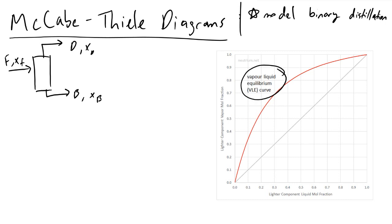The VLE curve varies based on the species you're dealing with — in the case of water and ethanol, for example, it will look a little different. We're going to have three lines on our diagram in addition to the VLE curve and the Y equals X line.